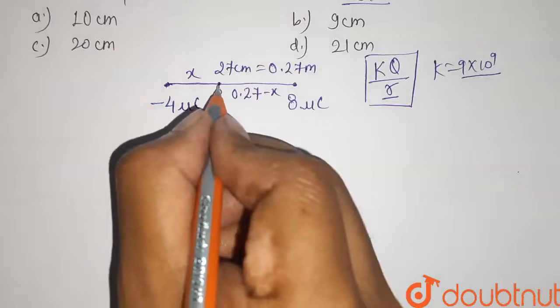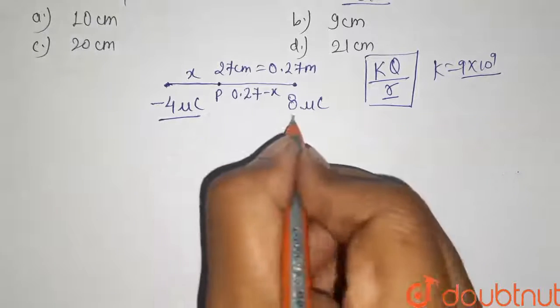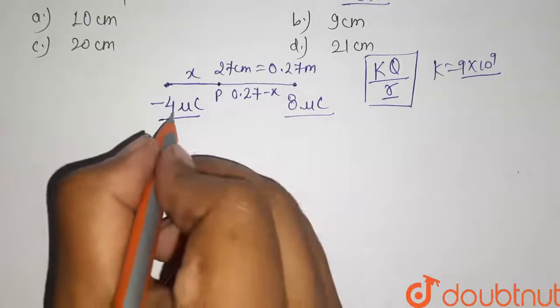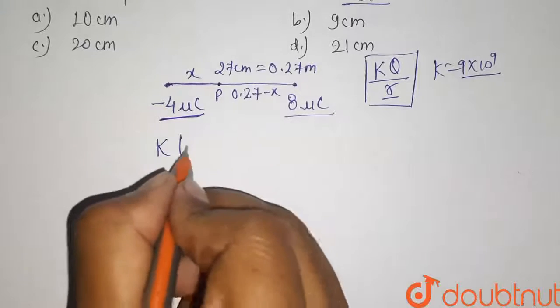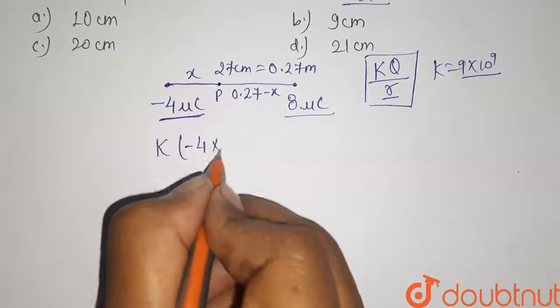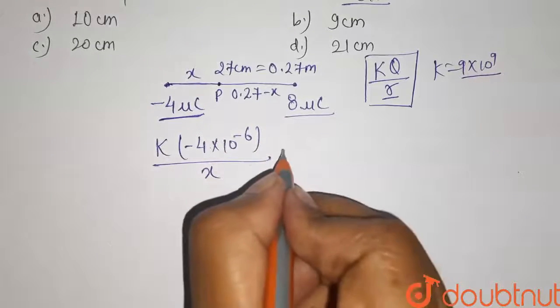Now the potential at P will be the algebraic sum of the potential due to this charge and due to this charge. So the potential due to minus 4 micro coulomb will be given by k into minus 4 micro coulomb, that means 10 to the power minus 6 coulomb, divided by the distance here is x.